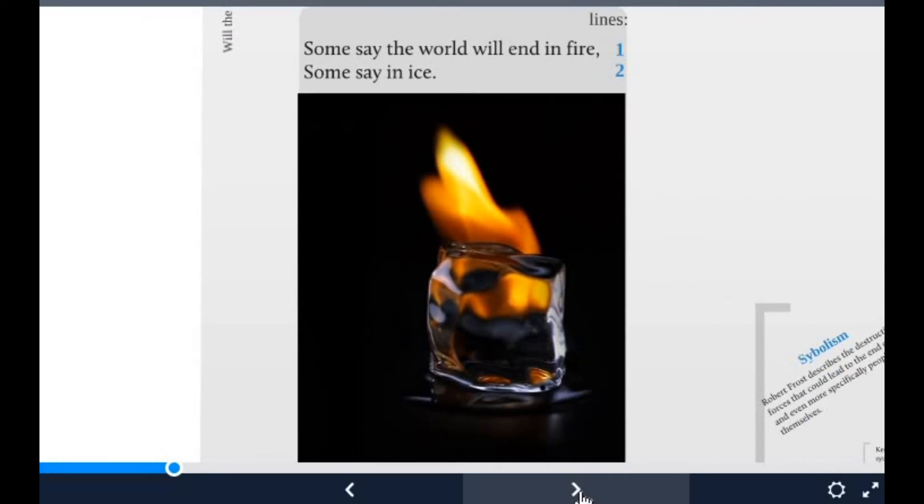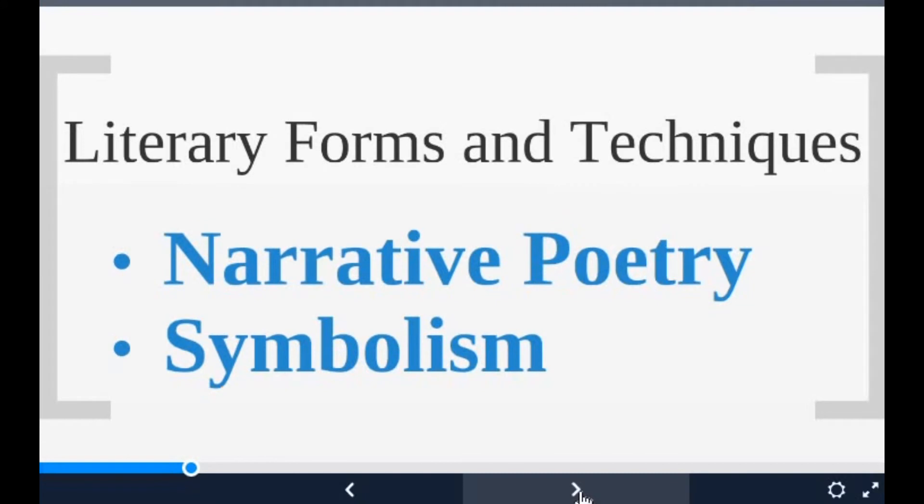Some say the world will end in fire and some say in ice. There are two literary forms and techniques: one is narrative, where we go into the meaning of the lines, and second is symbolism, in which we study the poetry where a few words stand as symbols. You remember the poetry Dust of Snow—I told you Robert Frost always uses symbolism in his poetry.